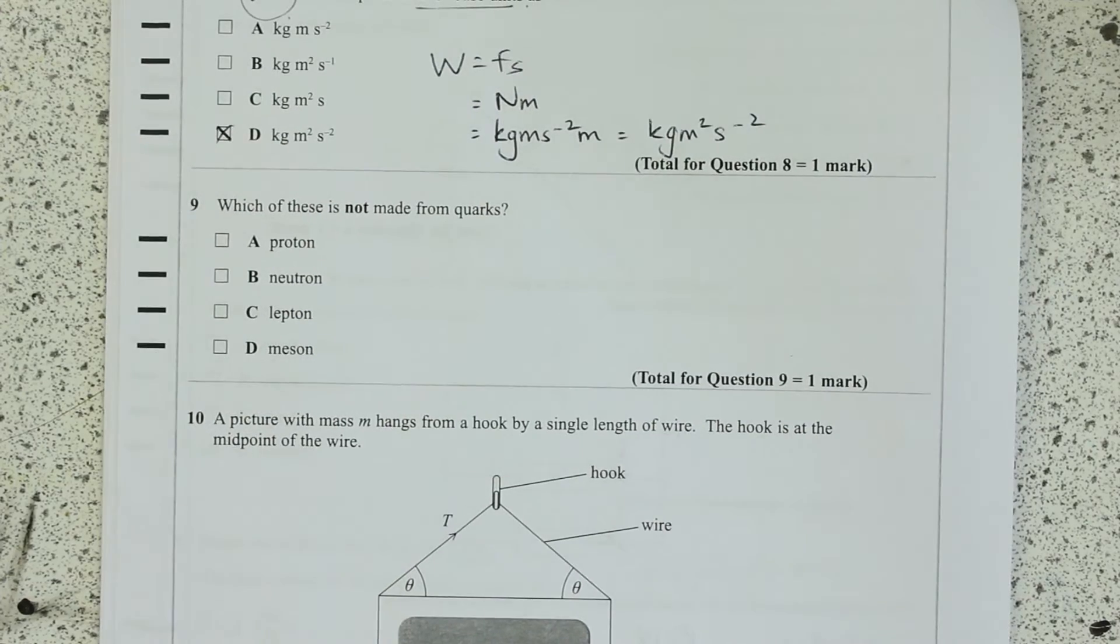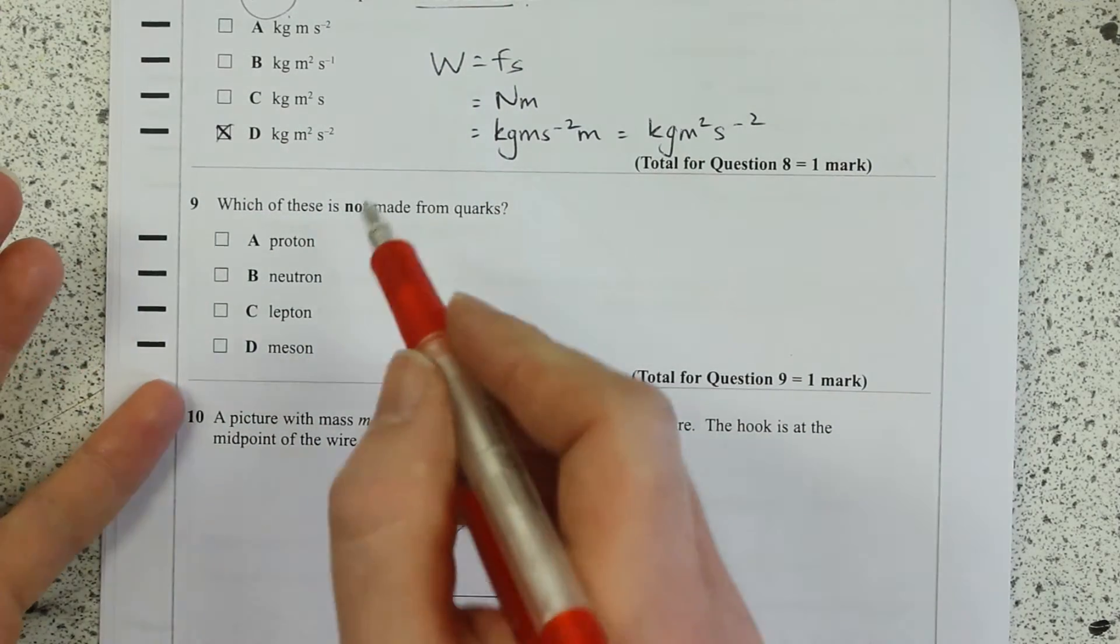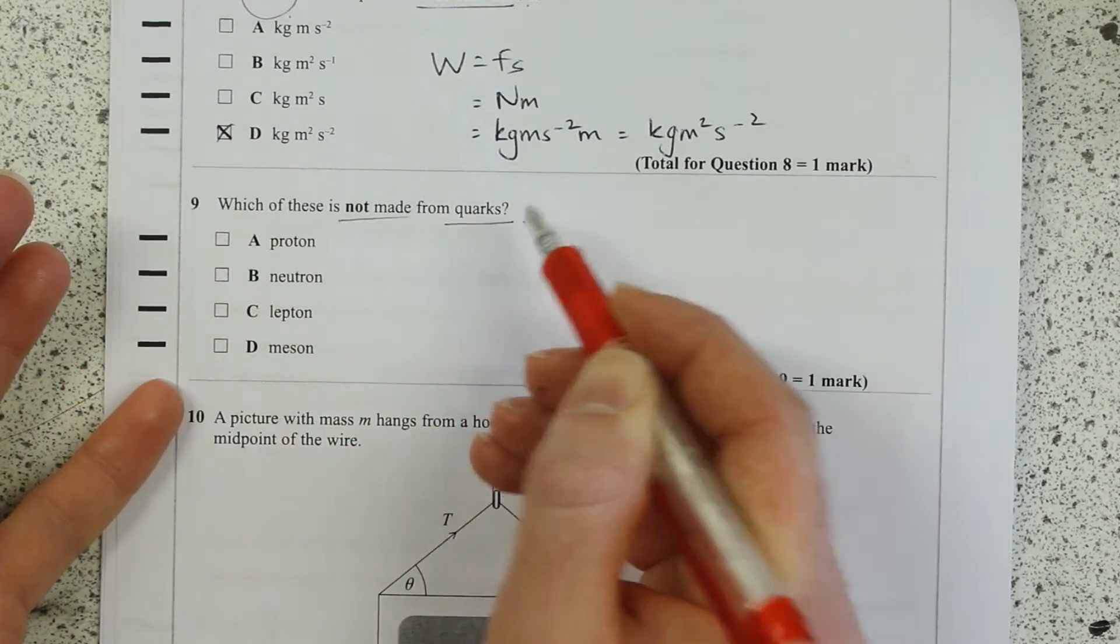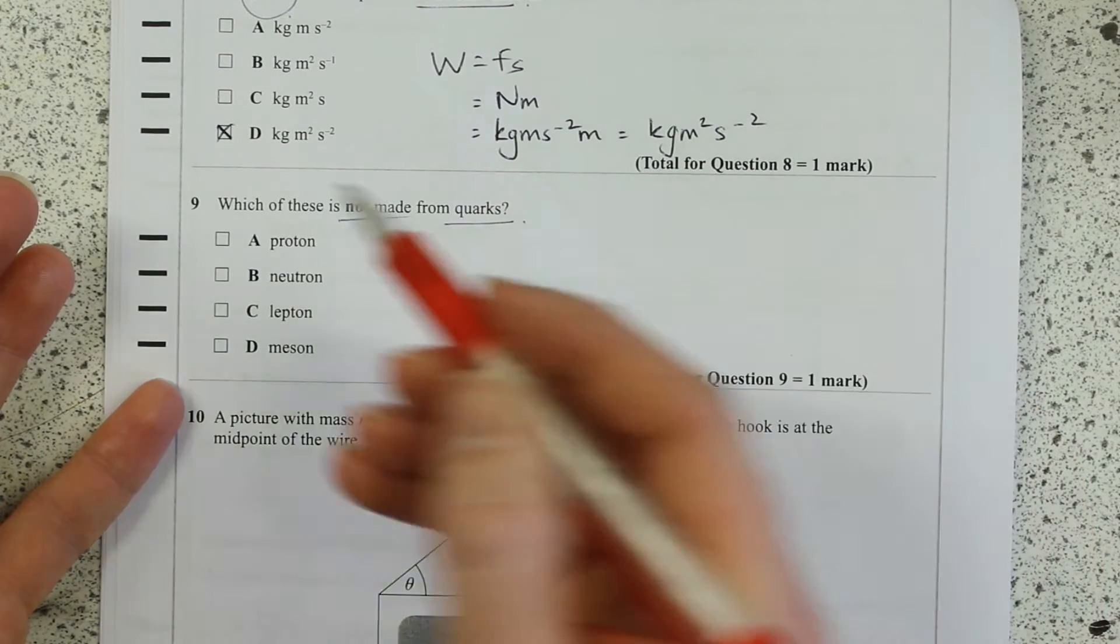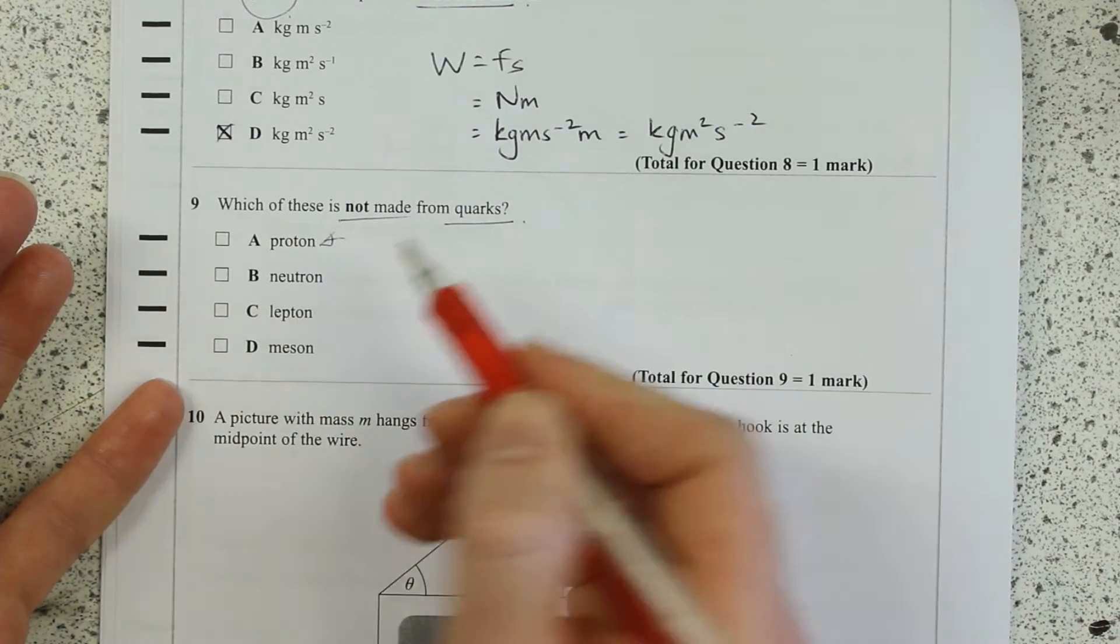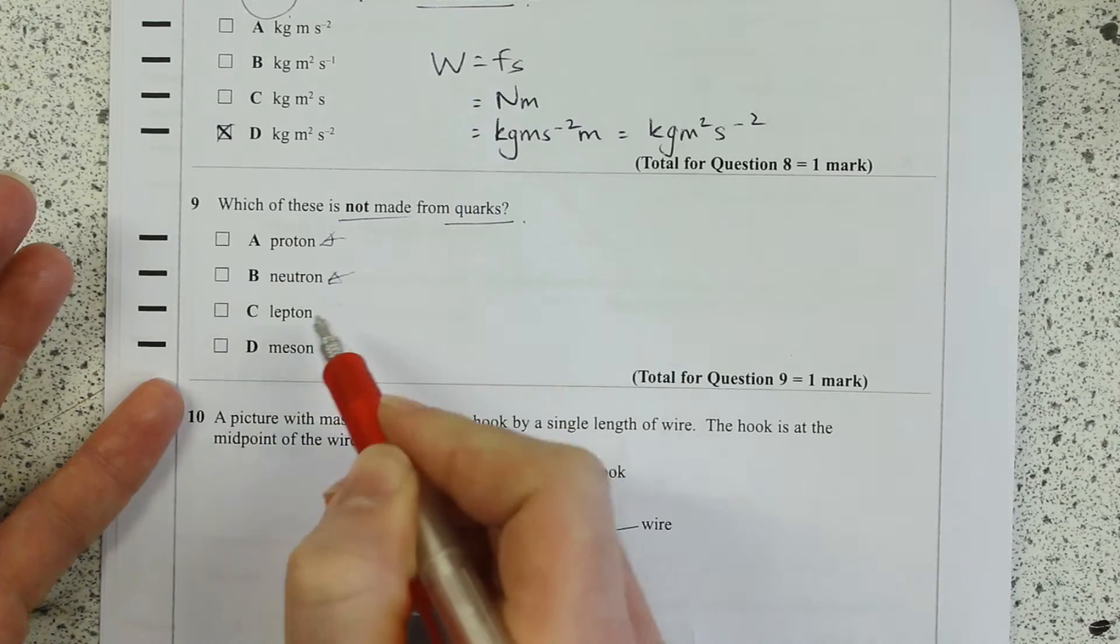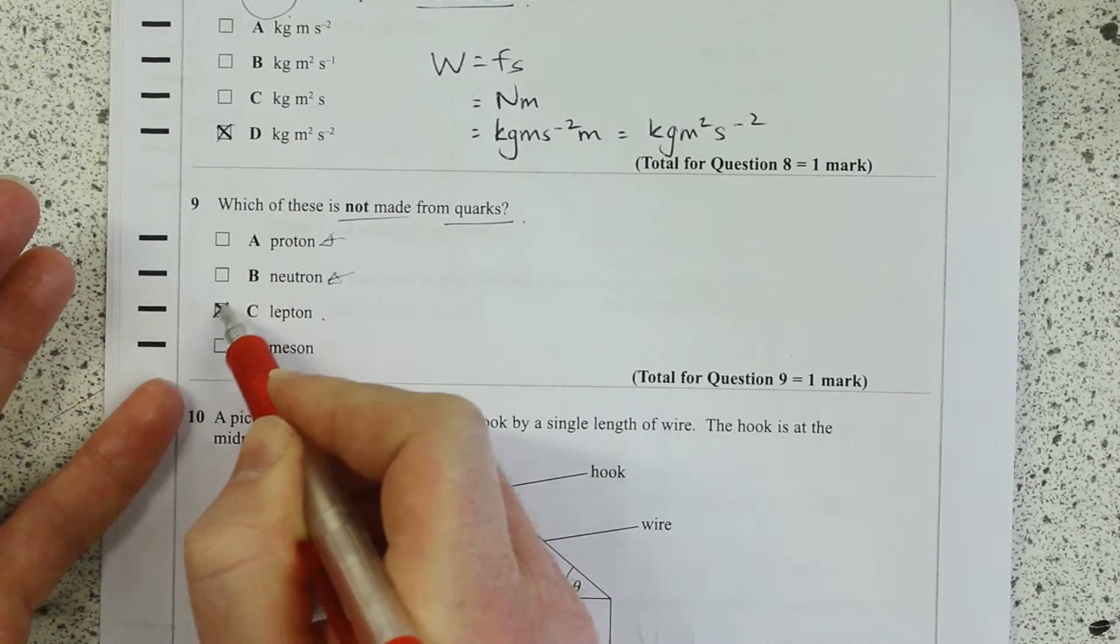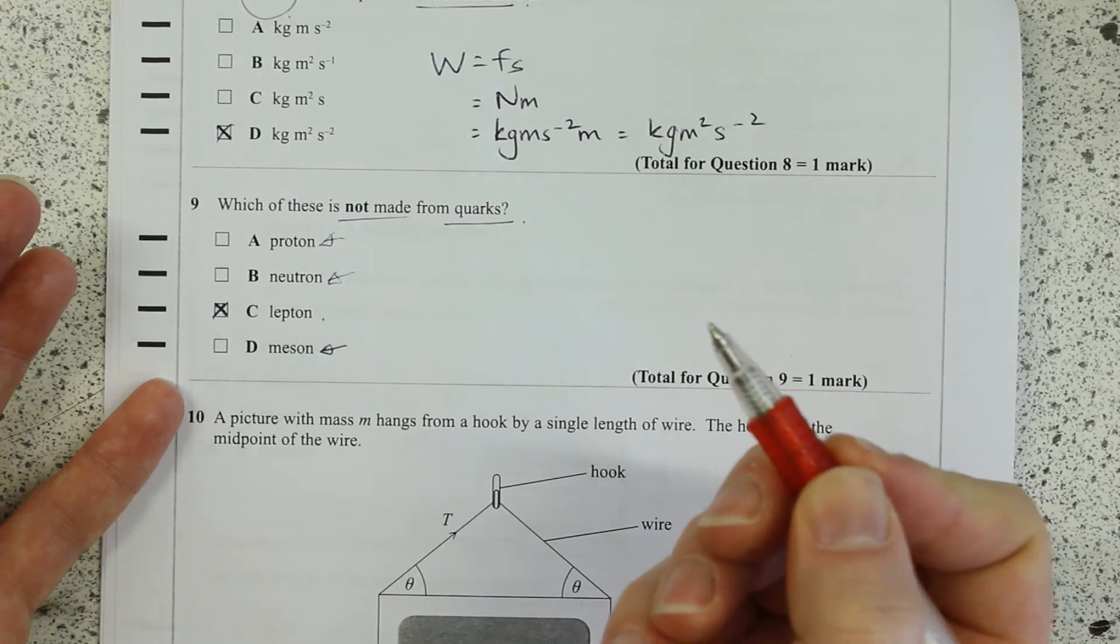This one is just a really simple fundamental physics question: which is not made from quarks? Quarks make hadrons, okay? So proton is a hadron, neutron is a hadron, lepton is a fundamental particle so it's not made from quarks. Meson is also a hadron.